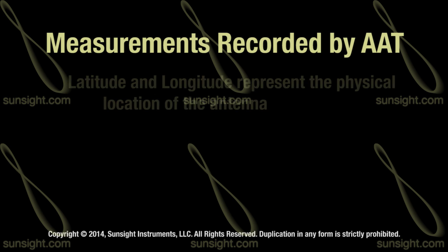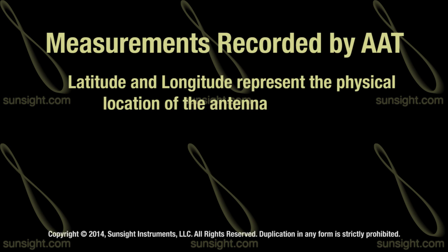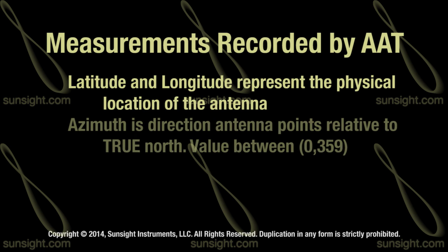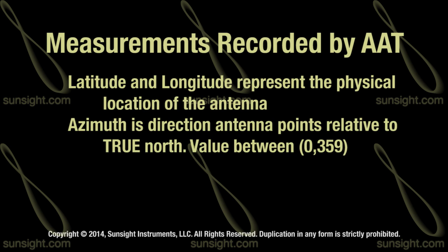The latitude and longitude represent the location of the antenna on the earth, like a point on a map. Azimuth is the direction the antenna is pointing relative to true north, like compass readings, and it ranges from 0 to 359 degrees.